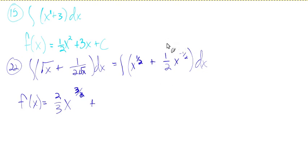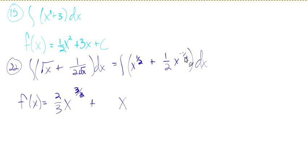Moving to the second term: since we're going backwards and antiderivatives split across addition just like derivatives do, we take the antiderivative of each part separately. We want to wind up with x to the negative one half. What power do we subtract 1 from to get negative one half? That would be positive one half. Conveniently, one half is already the coefficient we have — so one half x to the negative one half is the derivative of x to the one half. We've found the antiderivative.